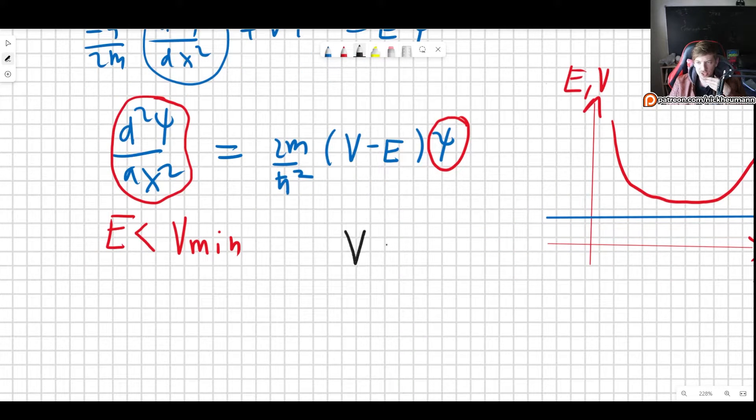So what this means is that if the potential is negative, for example, then we know that the energy is smaller than the smallest possible value of the potential. So that means that V minus E would be positive.